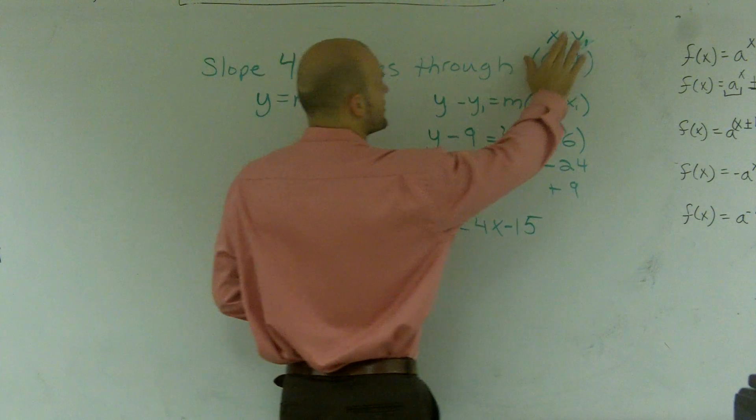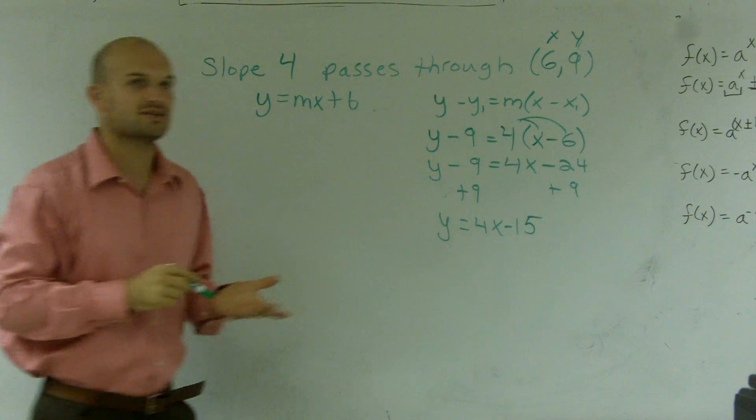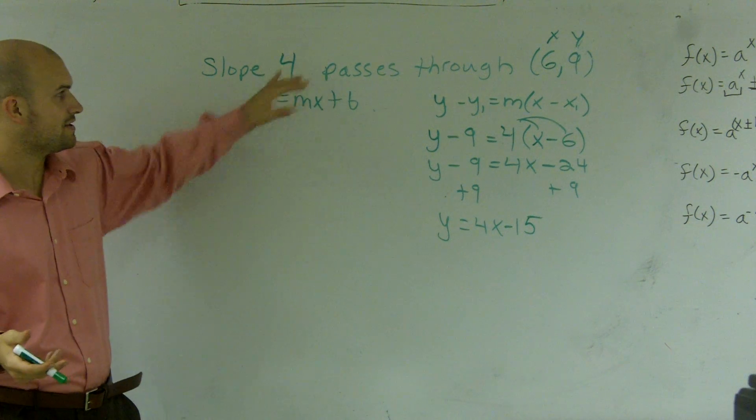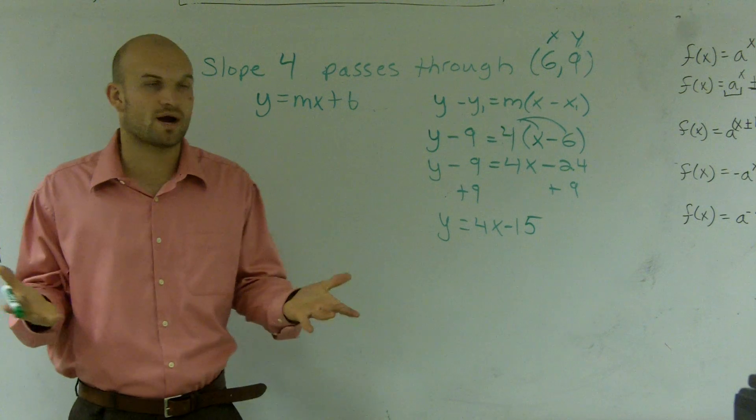Well, one thing you've got to remember is if you have a point, that's your x and your y, right? You can label every point x and y, and then you can label the slope. So the only thing that we're missing is our b, which is our y-intercept.